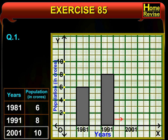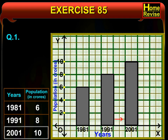Similarly, leaving 1 cm on the right hand side, we shall draw a bar for the year 2001 which ranges up to 10. We should not forget to write 'year' below the years mentioned on the x axis and 'population in crores' on the y axis. This is our required bar graph.